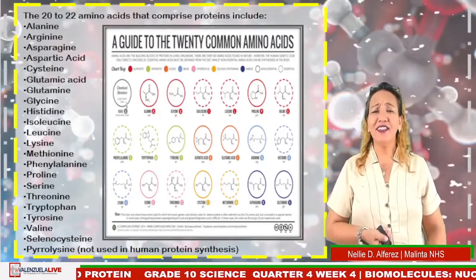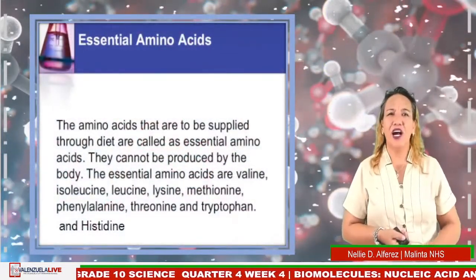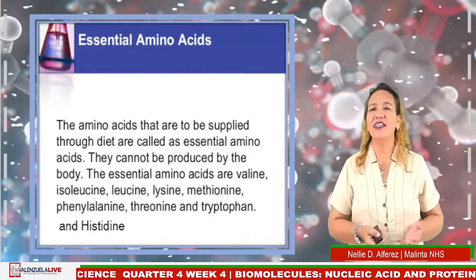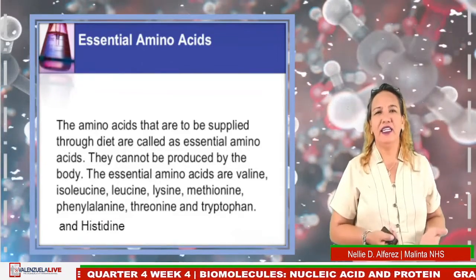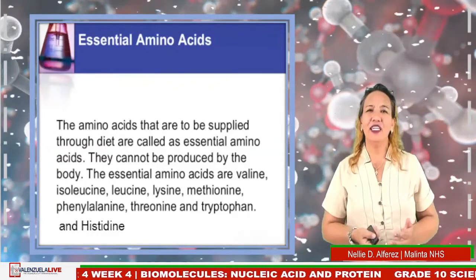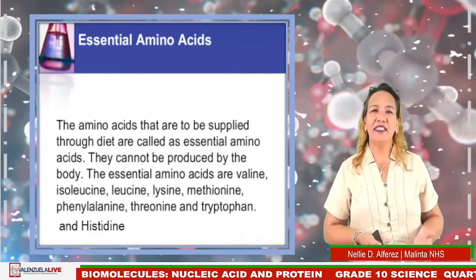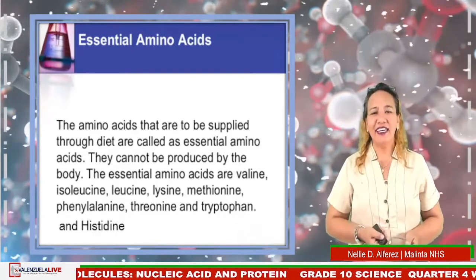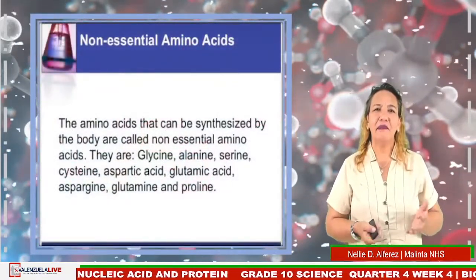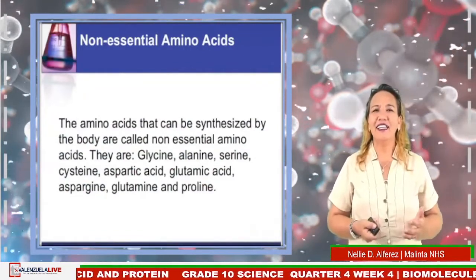Amino acids are classified into three categories. Essential amino acids must be supplied through the diet because they cannot be produced by the body. The essential amino acids are: isoleucine, valine, leucine, methionine, phenylalanine, threonine, tryptophan, and histidine. Non-essential amino acids can be synthesized by the body and include: glycine, alanine, serine, cysteine, aspartic acid, glutamic acid, asparagine, glutamine, and proline.